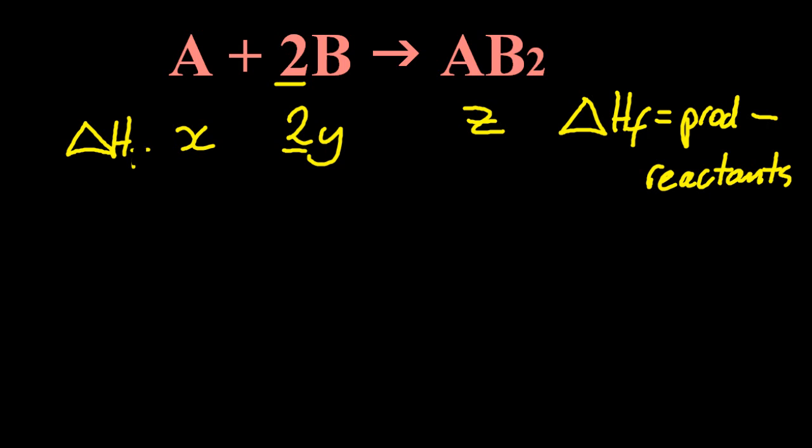You should also know that it works for delta G, the change in Gibbs free energy. So delta G of the products minus delta G of the reactants, and it might be STP, we might stick that little theta sign in there, if you will. I think it's a theta, not a Saturn.